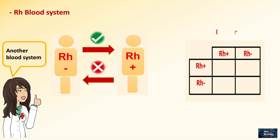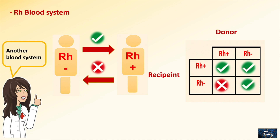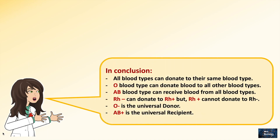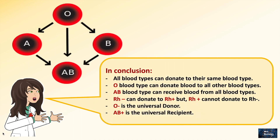So now we understand that the Rh positive blood type can receive from both positive and negative blood types, but Rh negative can receive only from Rh negative. In conclusion, all blood types can donate to their same blood type. O blood type can donate blood to all other blood types. AB can receive blood from all blood types.